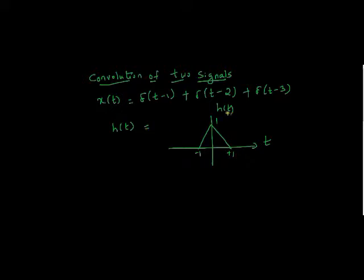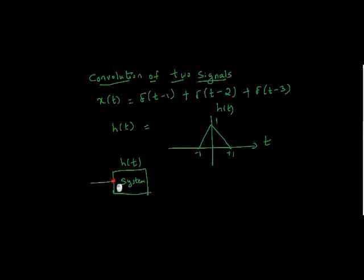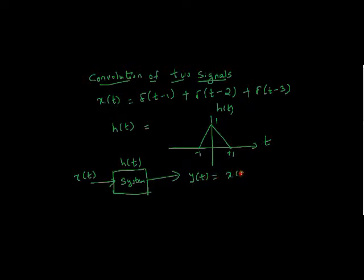As shown in the figure, we have to calculate the output. This is our system with impulse response h of t, and this is the input x of t. We know that with the help of convolution we can find the output y of t using this formula.